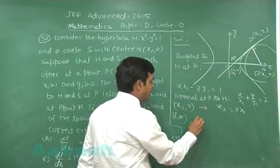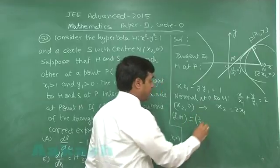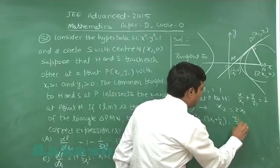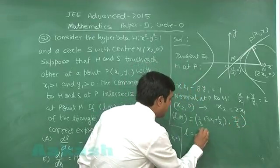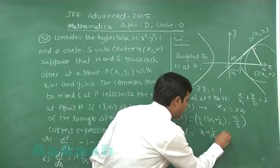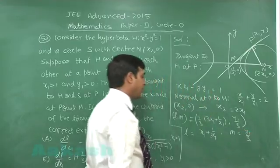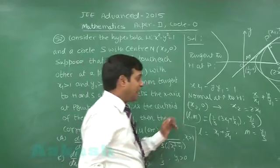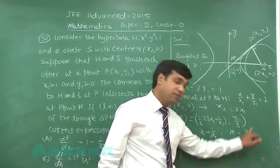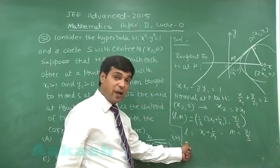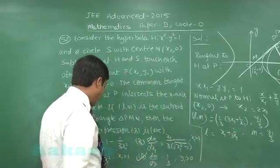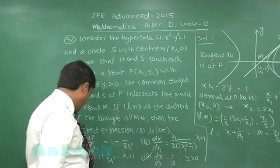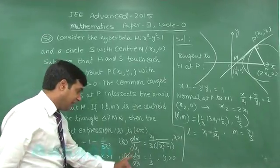The centroid L of triangle PMN is computed as: L = (1/3)(x₁ + 1/x₁ + 2x₁, y₁ + 0 + 0) = (x₁ + 1/(3x₁), y₁/3). So the L-coordinate is x₁ + 1/(3x₁) and the M-coordinate is y₁/3. Option d states dM/dy₁ = 1/3, which is correct since M = y₁/3. Differentiating L with respect to x₁ gives 1 − 1/(3x₁²), which matches option a.